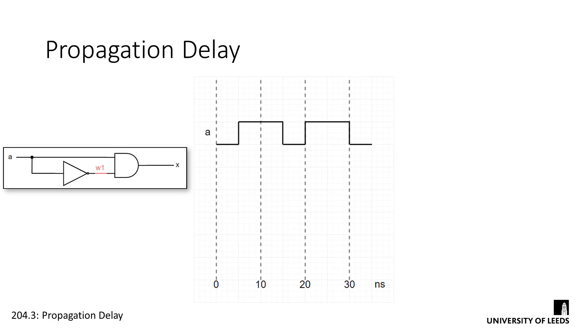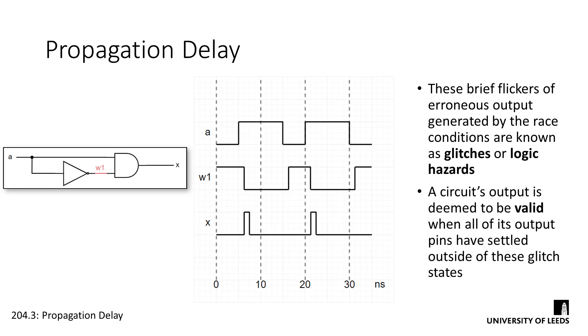We'll pulse A high twice for 10 nanoseconds and examine the effects on wire 1 and output x. The signal takes 1 nanosecond to propagate through the NOT gate, so the inverted signal at wire 1 is slightly offset. This means that we have two 1 nanosecond periods where both A and wire 1 are high, which will trigger the output of the AND gate. The AND gate itself however also has a 1 nanosecond delay and therefore these brief high states are offset again.